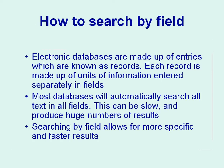Field searching means you can use the way the database has been constructed to your advantage. As information in a record is entered as separate units into fields — for example, author, title, source for journal title, etc. — you can search using these specific elements and retrieve the information you want very quickly.